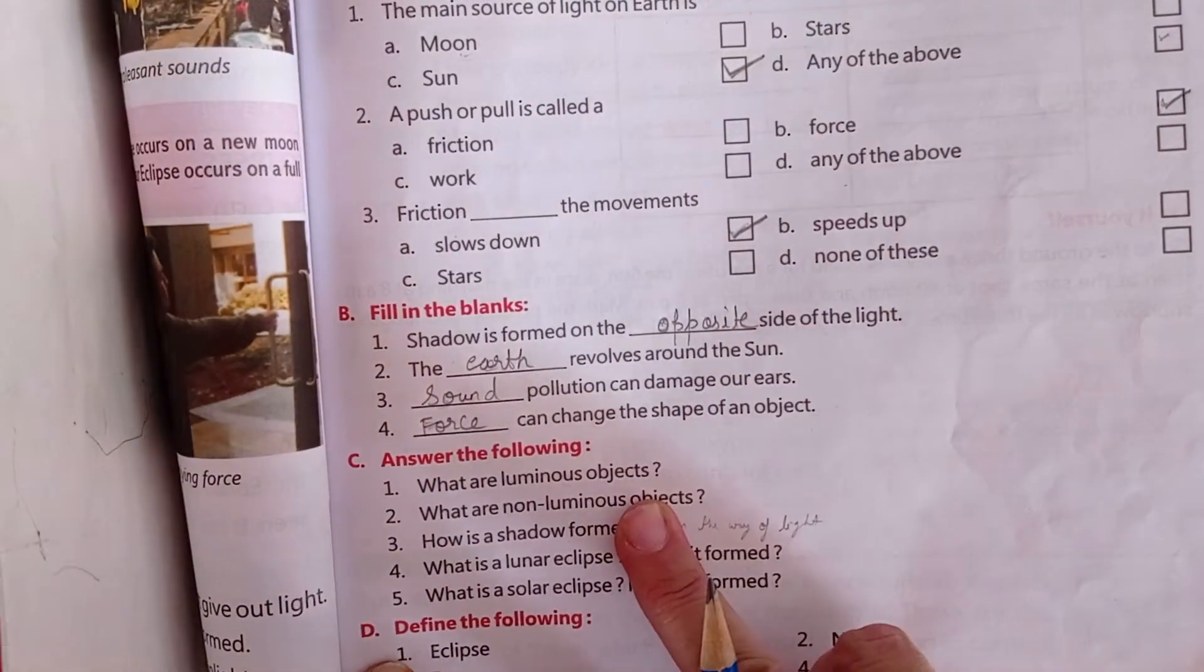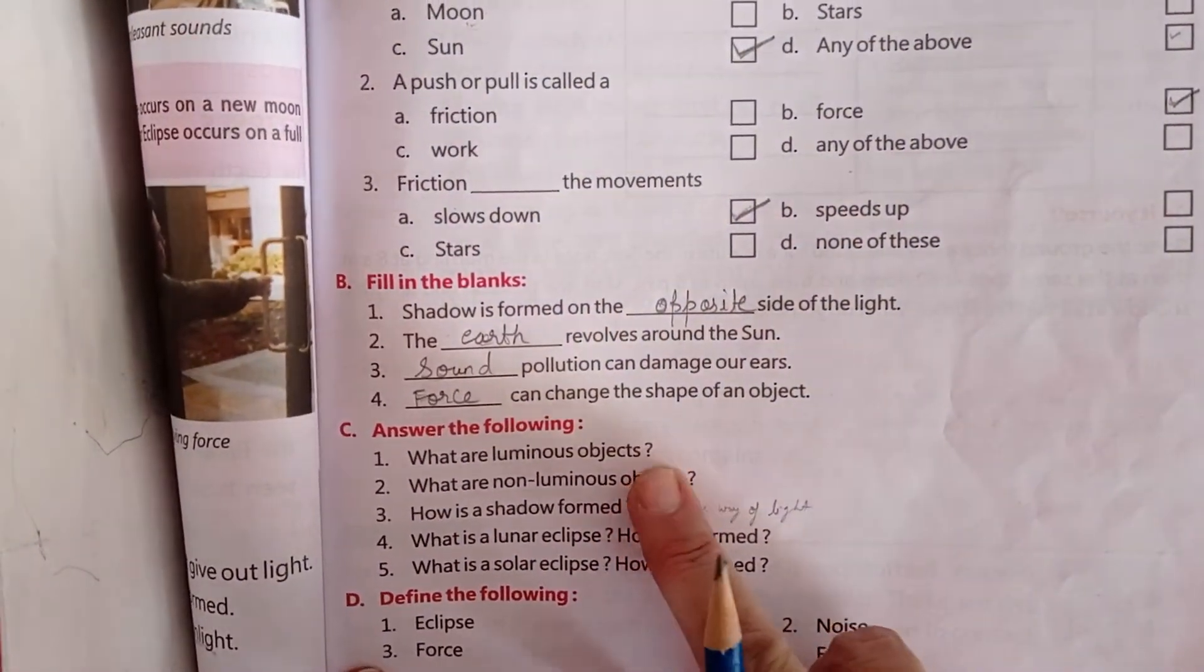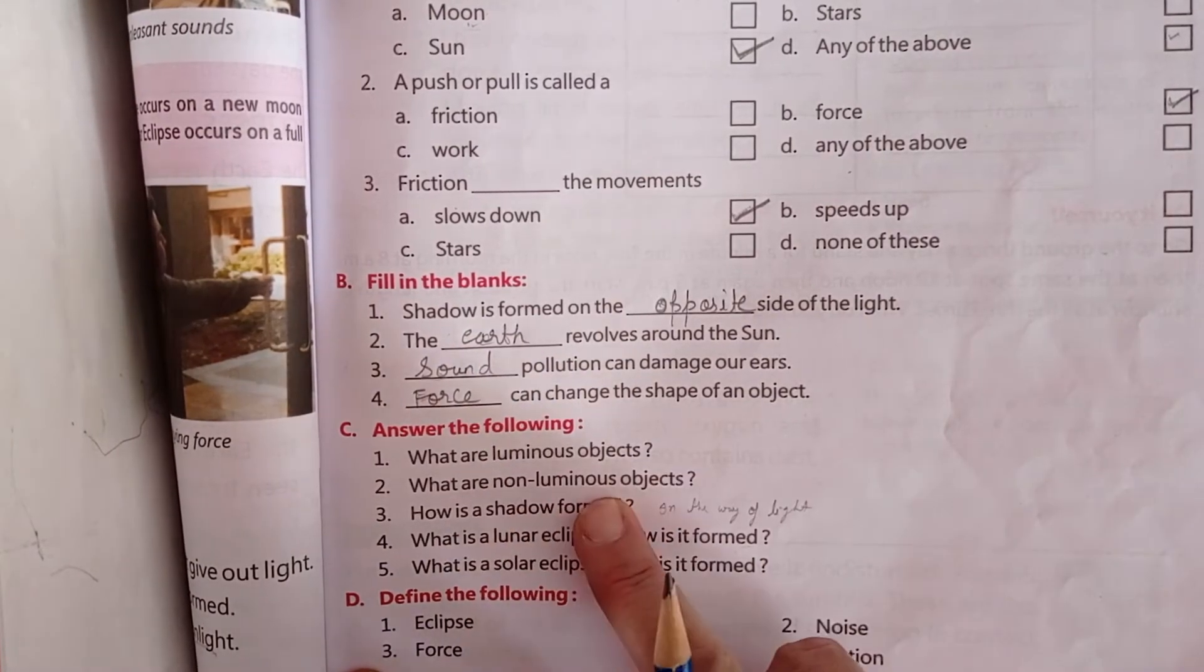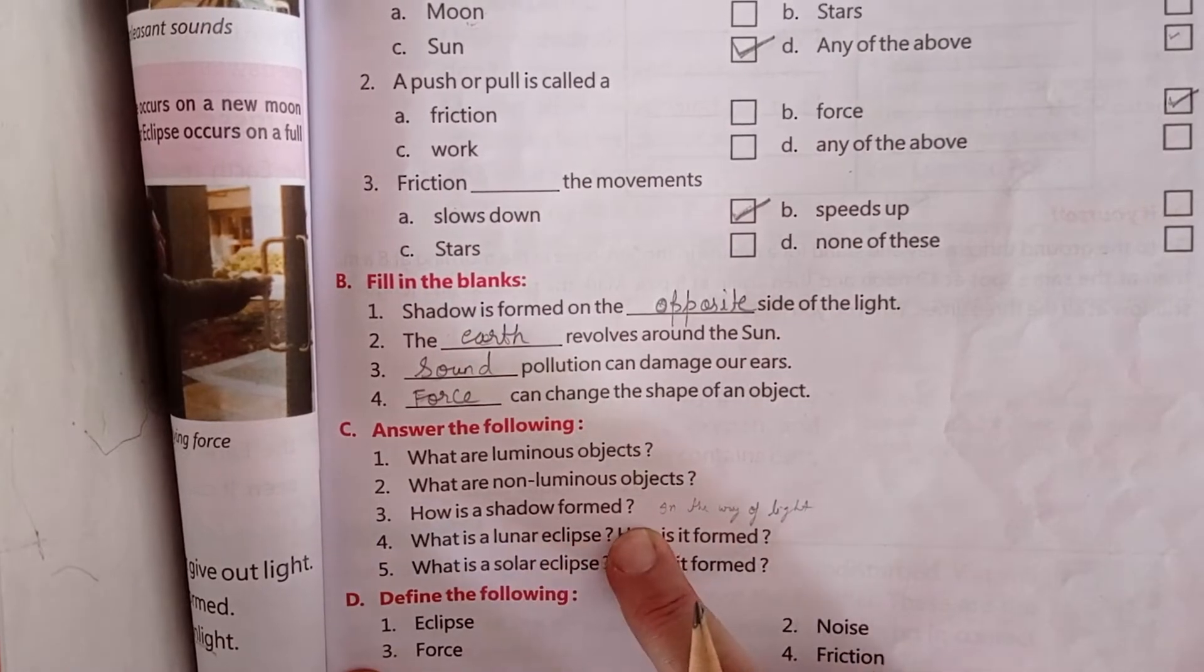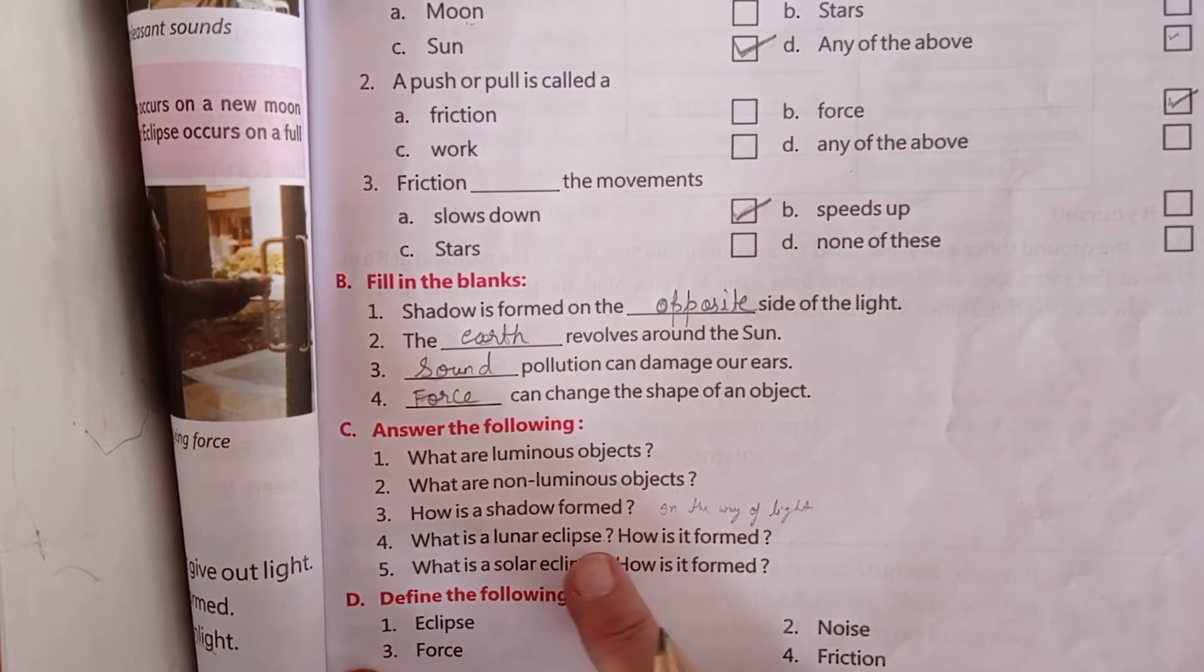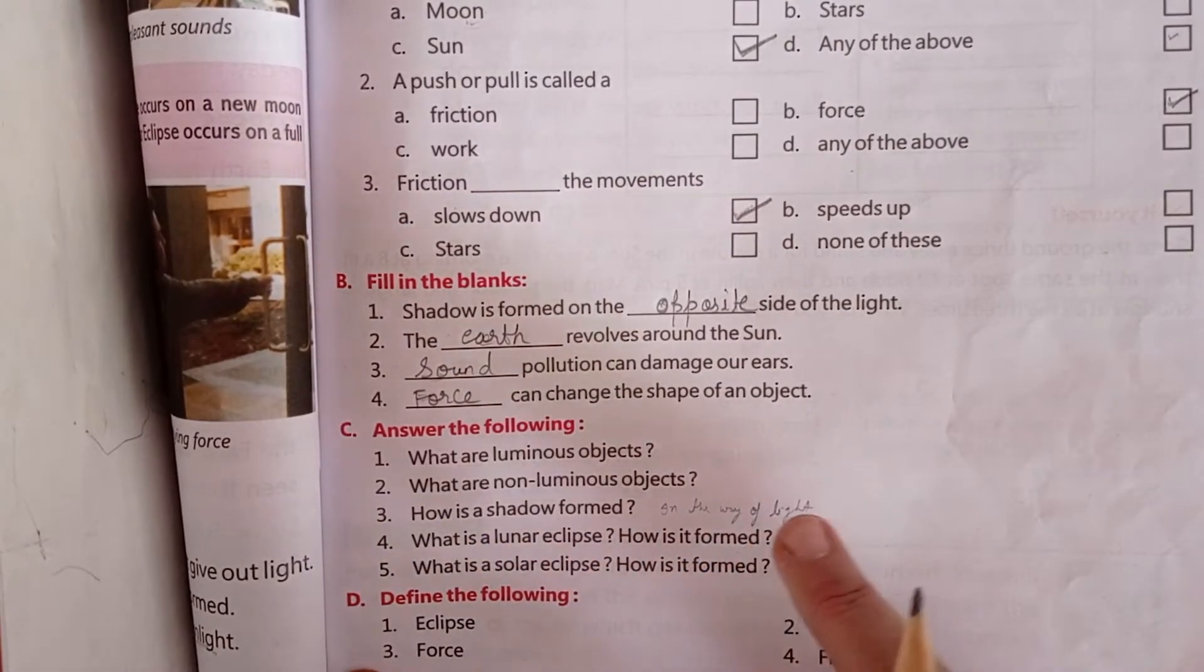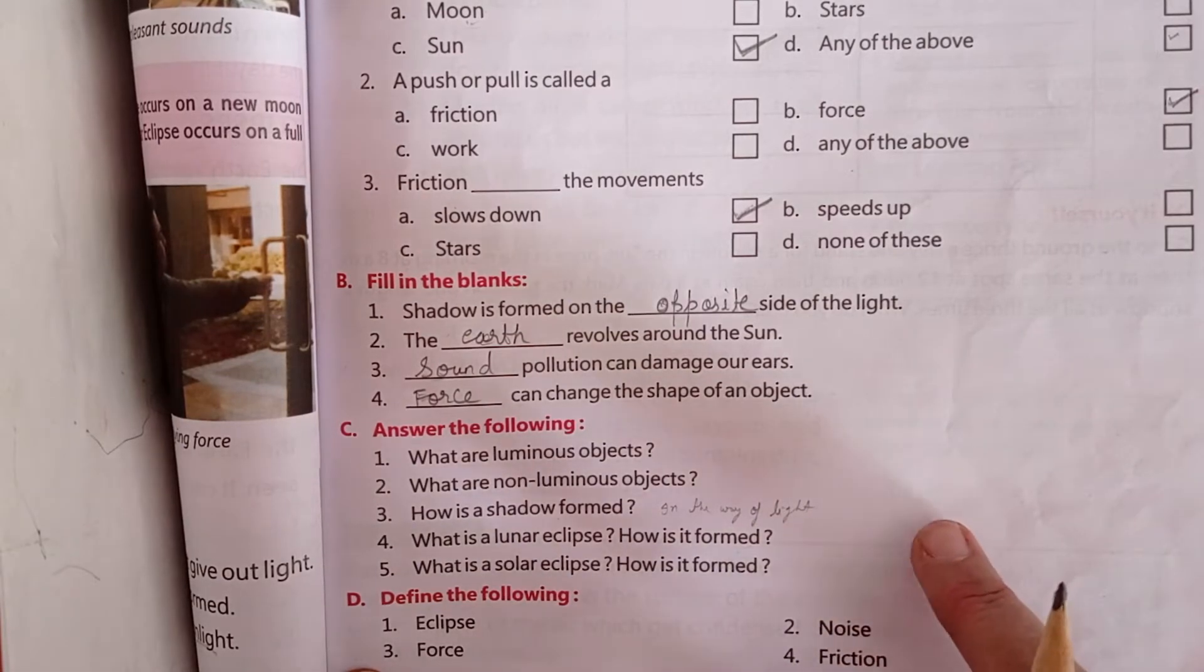What are luminous objects? Objects that give light are luminous. What are non-luminous? Objects that don't give light. How is a shadow formed? A shadow is formed when light is blocked.